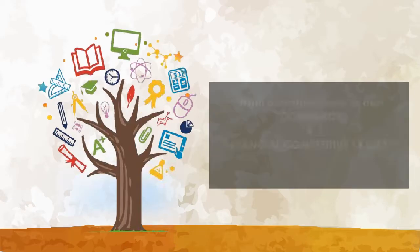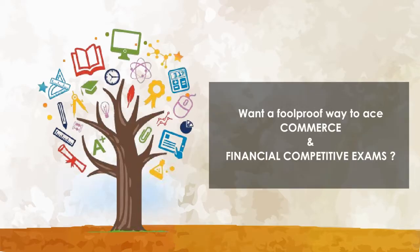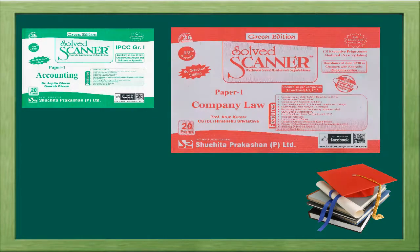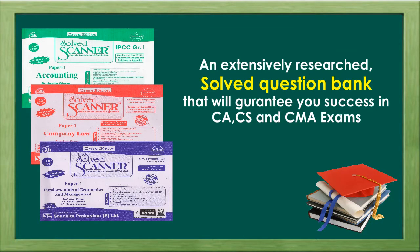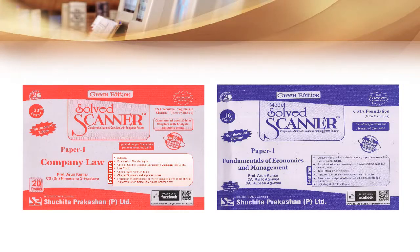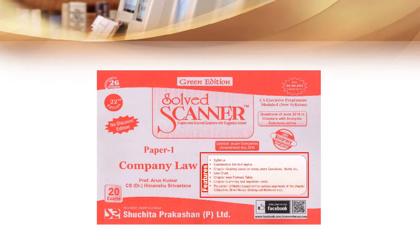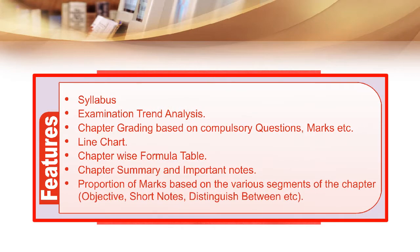In this competitive dog-eat-dog world, what is the foolproof way to ace commerce CA, CS, and CMA examinations? Suchita Prakashan's Solved Scanner helps you prepare for various levels of CA, CS, and CMA. It is a widely categorized and extensive question bank including questions from the past CA, CS, and CMA exams spanning the last 20 examinations. Let us take a look at its salient features.